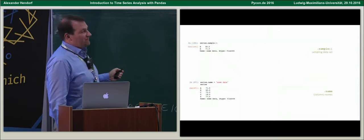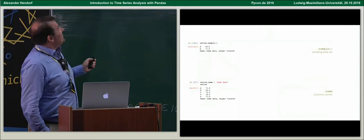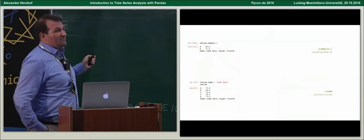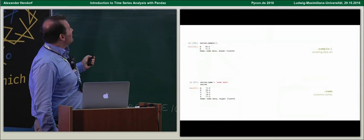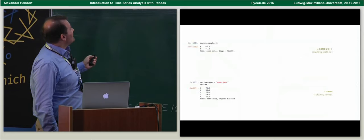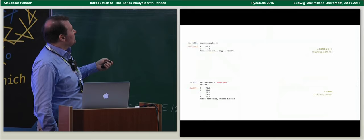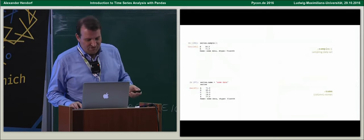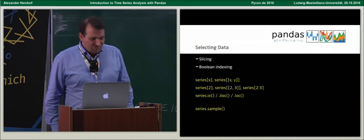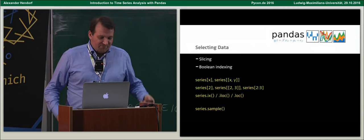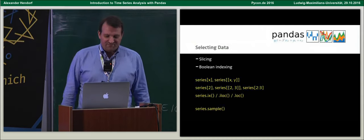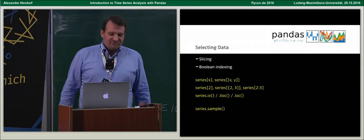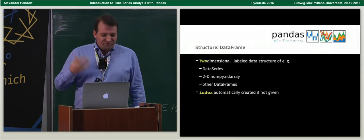Two more nice features: we can sample our series — just ask it to return two random rows from the data set. We can also easily rename our series and give it a name, which will show up when we display the series. Now this was a crash course on how to select and slice data, with an introduction to boolean indexing and sampling.